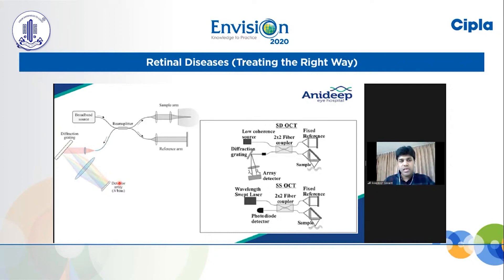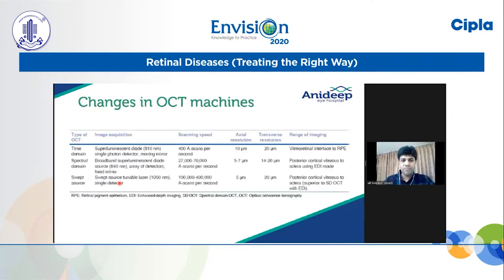In swept-source OCT, the light source itself is new — you have a longer wavelength, which also helps the patient because it falls in the invisible spectrum, so the patient is not disturbed while taking the OCT image. The swept-source OCT uses a tunable laser at 1050 nanometers, hence it has a higher number. It has faster speed of acquisition of A-scans per second — almost 1 lakh to 4 lakhs — and axial resolution has almost remained the same. The important thing is imaging of deeper structures is better with swept-source because the wavelength is more penetrable.